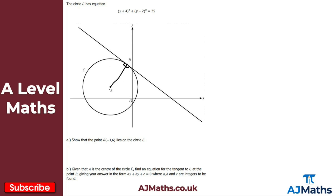This is really important because if we want to find the equation of the tangent, we need to use the fact that the radius and tangent meet at a right angle — they're perpendicular. We can find the gradient of the radius, and from that find the perpendicular gradient, and hence find the equation of the tangent. That's an important property from GCSE maths we'll use throughout this video.